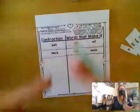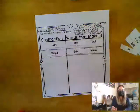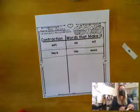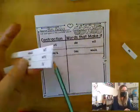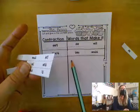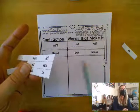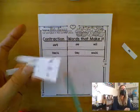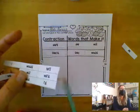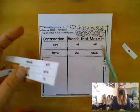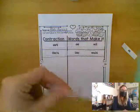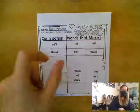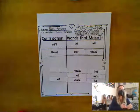And now you'll do the next one. You'll look for a contraction, cut it out, glue it here, and then glue the two words that make it, then draw your line and keep going. Does everyone understand what they're doing on this page?